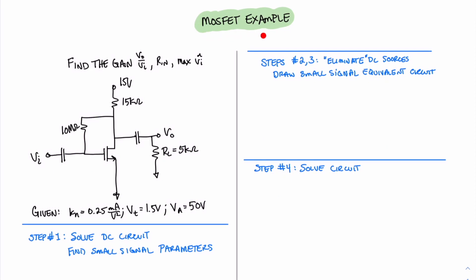In this video, we're going to look at a MOSFET circuit example. In this case, we're asked to find the gain of the circuit Vout over Vin, the input resistance Rin, and the max voltage input that is allowed to maintain saturation mode. We have a 15 volt power supply, a 15 kilohm drain resistor, and a feedback resistor R sub G that provides a DC voltage at the gate, biasing this transistor. We also have a couple of coupling capacitors that couple the voltage input signal with the DC circuit, and a coupling capacitor at the output that couples to our load resistor of 5 kilohms.